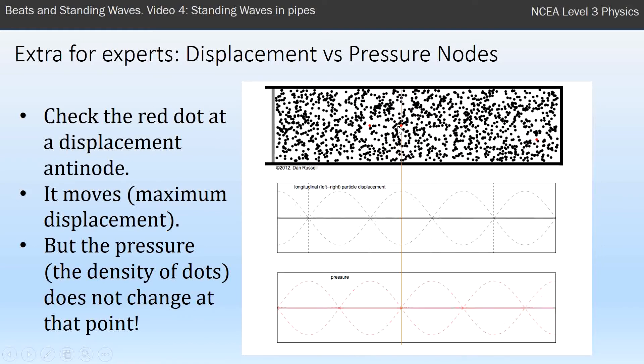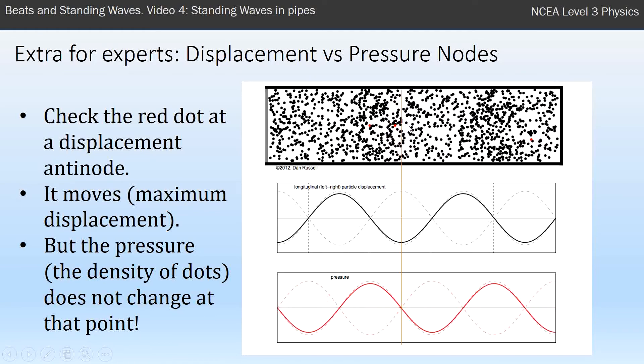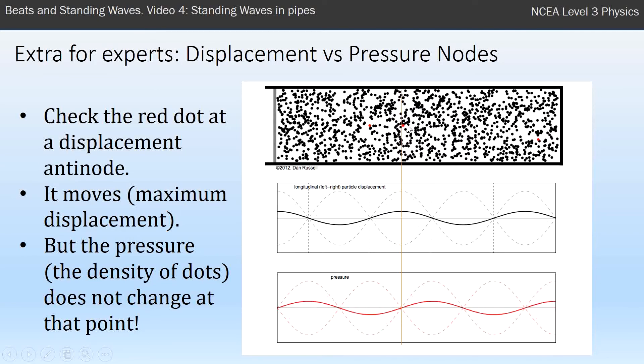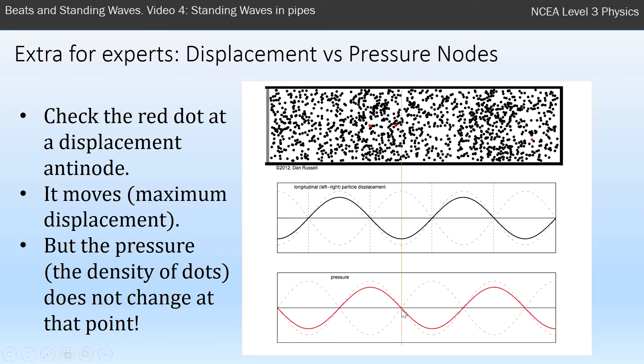So this is a displacement anti-node, but it's a pressure node.